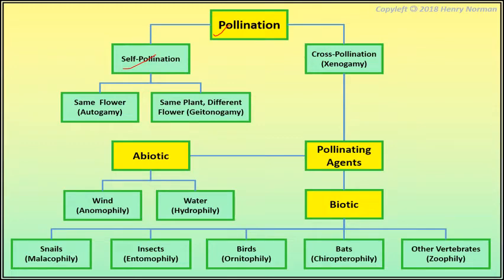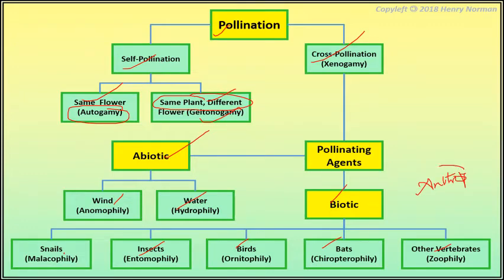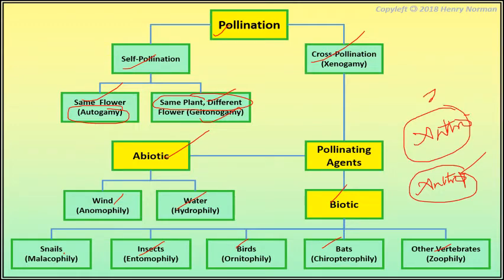Self-pollination is of two subtypes: autogamy, which occurs within the same flower, and geitonogamy, which occurs between different flowers on the same plant. Cross-pollination involves abiotic agencies like wind and water, and biotic agencies including insects, animals, snails, birds, bats, and other vertebrates. Humans can also transfer pollen grains — the term for this is anthrophily. The term for seed/fruit dispersal by humans is anthrocochory, and the broader terms are zoochory for fruit dispersal and zoophily for pollination by animals.